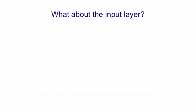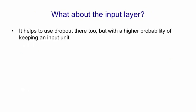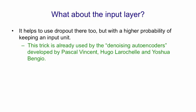What about the input layer? Well, we can use the same trick there, too. We use dropout on the inputs, but we use a higher probability of keeping an input. This trick's already in use in a system called denoising autoencoders, developed by Pascal Vincent, Hugo Larochelle, and Yoshua Bengio at the University of Montreal. And it works very well.